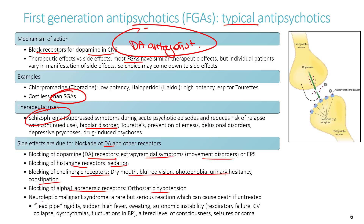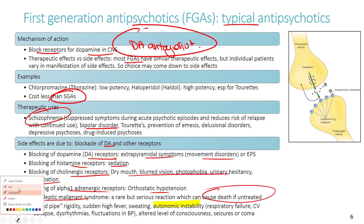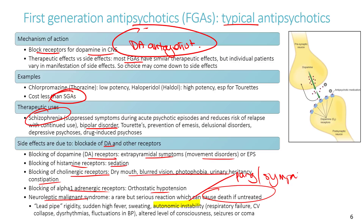First-generation antipsychotics can also cause neuroleptic malignant syndrome — a rare but serious, potentially fatal reaction. It causes autonomic instability, including depression of the respiratory tract, dysrhythmias, and fluctuations in blood pressure, which if left untreated can lead to seizures, coma, and death.